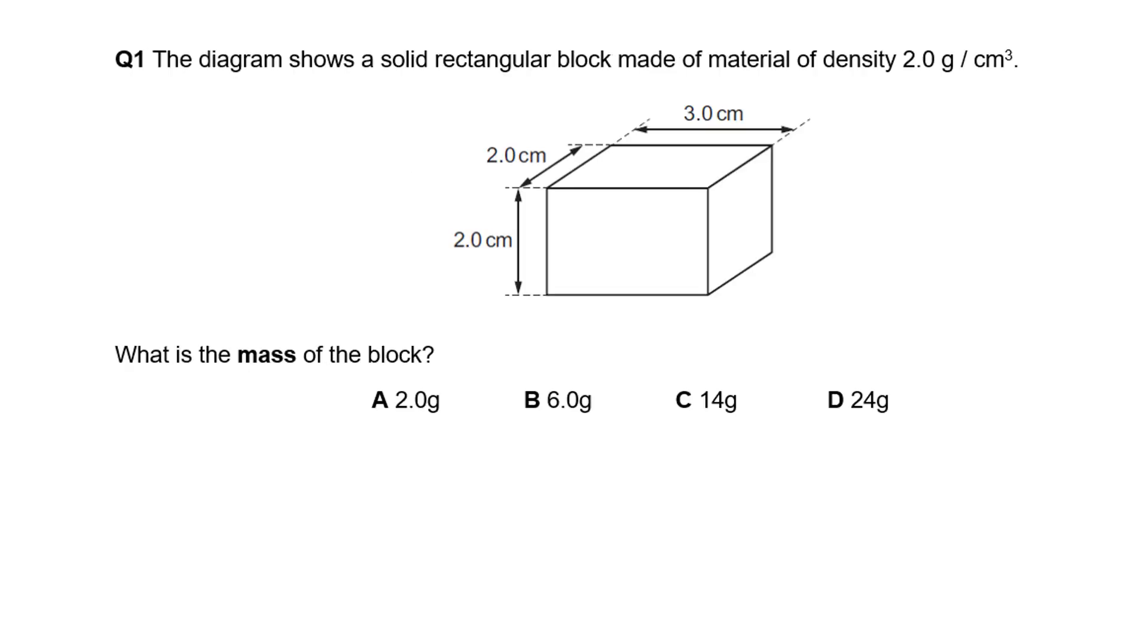Now for some multiple choice questions. We've got a solid rectangular block with density of two grams per centimeter cubed. What is the mass? First we work out the volume of the cube, then multiply that by the density to give us our mass in grams, because density was in grams per centimeter cubed. That's 24 grams.